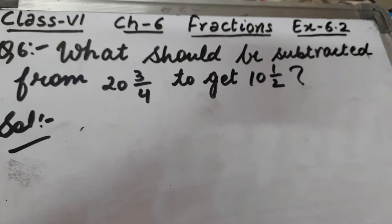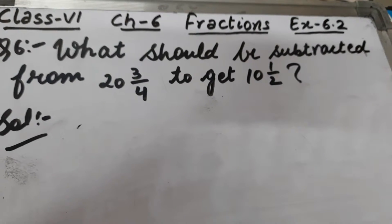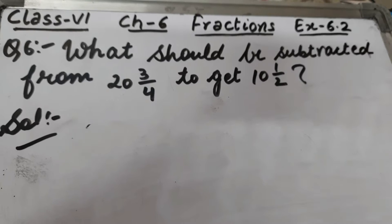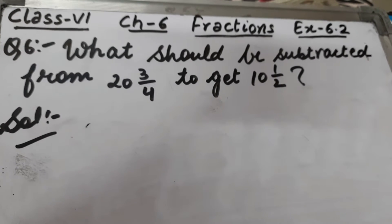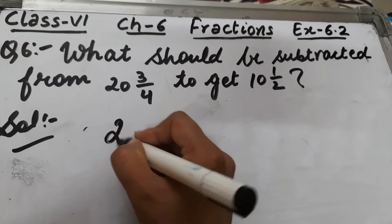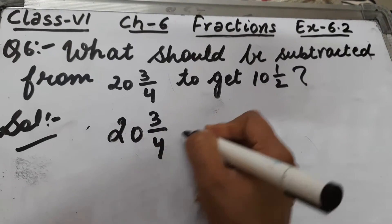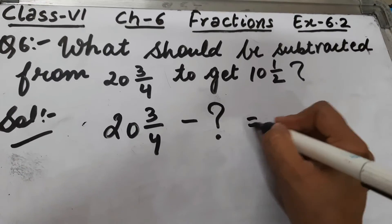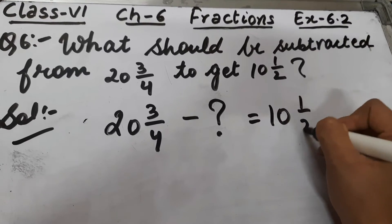Let's start question number 6 of exercise 6.2. The question is: what should be subtracted from 20 3/4 to get 10 1/2? 23 by 4 mein se kya subtract kiya jaye ki humare paas 10 1/2 aa jaye. This is the question.